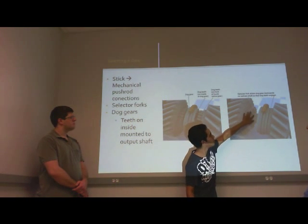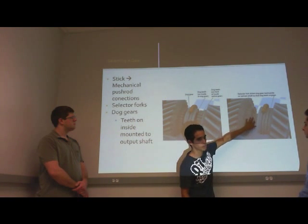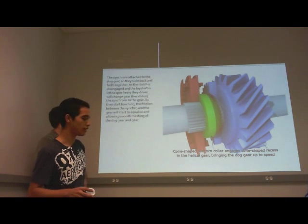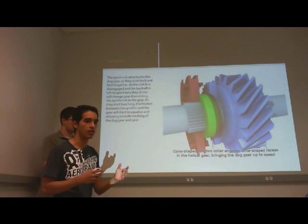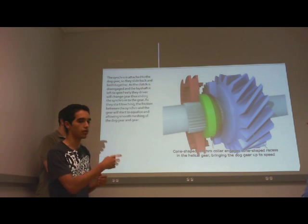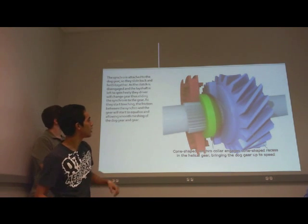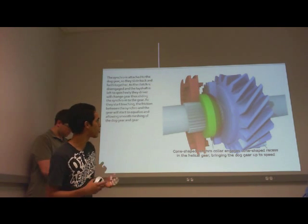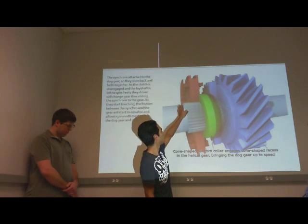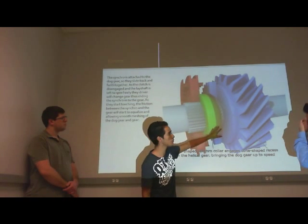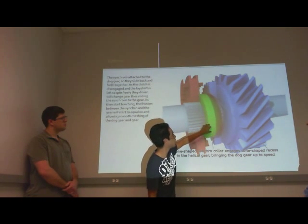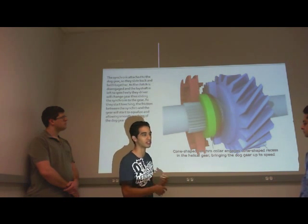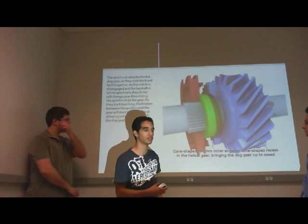You can see how all the teeth are bound on the output shaft and how the dog gear connects to the actual gear. The way that they don't grind is by using a synchro. When the dog gear is sliding into a gear, the synchro creates friction between the two so they end up rotating at the same speed, and the mesh will be smooth.